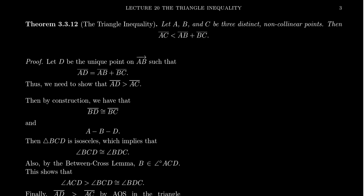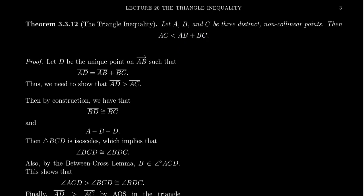The previous lecture, lecture 20, made sense of what it means to add together two segments. The idea is you take the segment BC and translate it onto the ray AB at the point B, thus extending the segment. For one segment to be less than another, the translation lies between the endpoints A and C. So in congruence geometry these three non-collinear points always satisfy AC is less than AB plus BC.